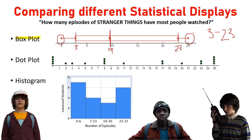If I told you he surveyed the exact same twenty people as Mike and Lucas, that would give you a little more information — and in fact he did. All three of these boys surveyed twenty people at Hawkins Middle School, the same twenty people. So the information on each display is the same.